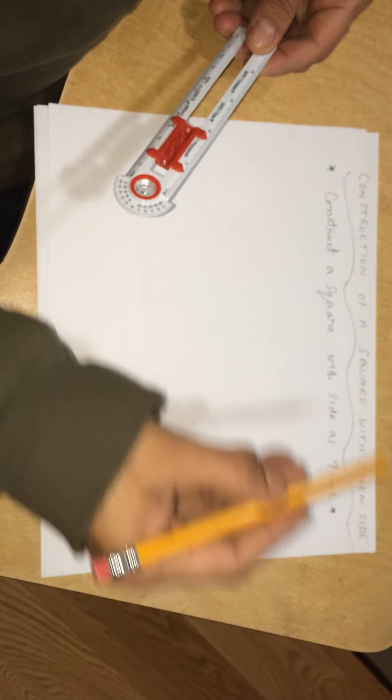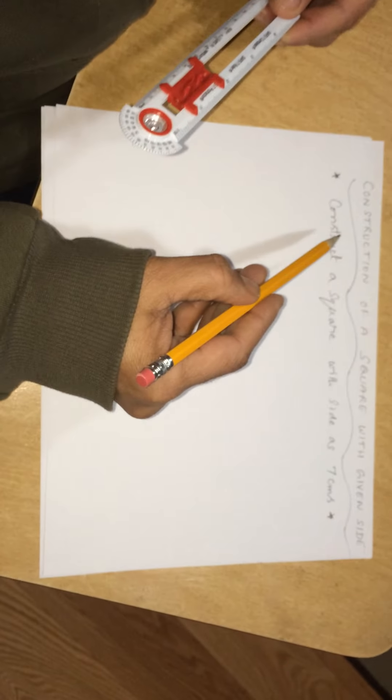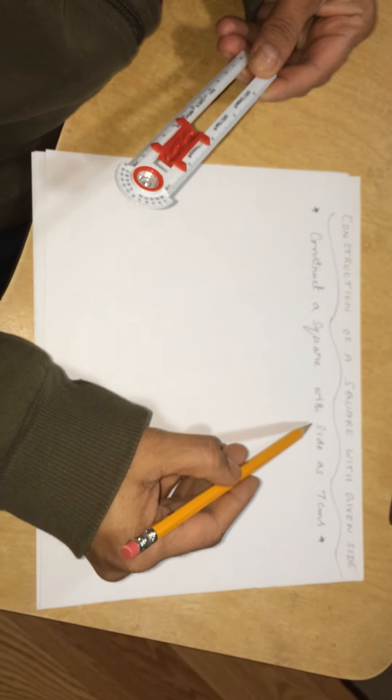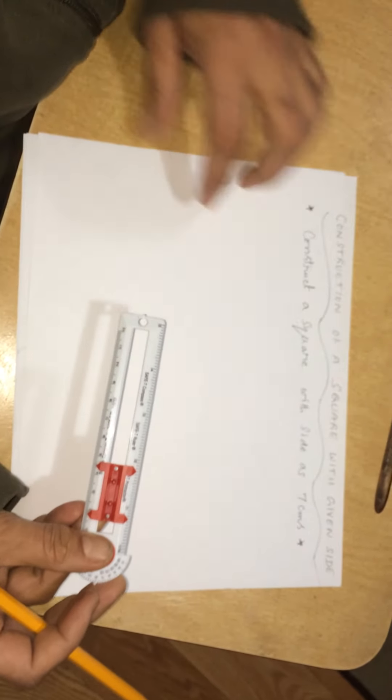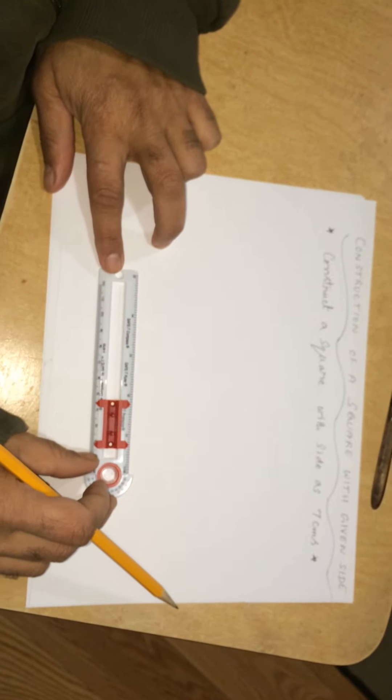Now, I am going to demonstrate the construction of a square with the given side. First, I construct a square with the side as 7 centimeters.